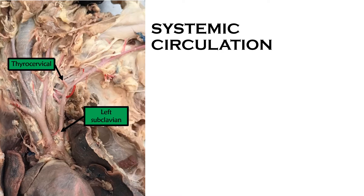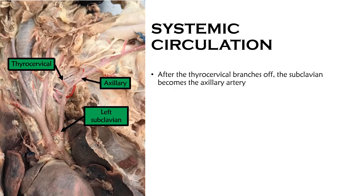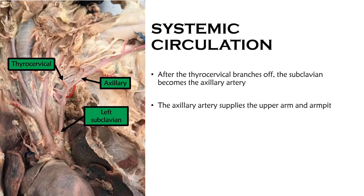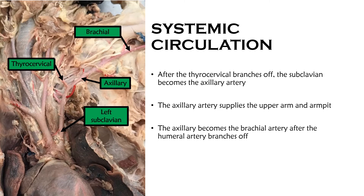Once we pass the thyrocervical artery, the subclavian continues to become the axillary artery, which supplies the upper arm and the armpit. The axillary artery then becomes the brachial artery once the humeral artery has branched off. The brachial artery supplies the lower arm and the hand.